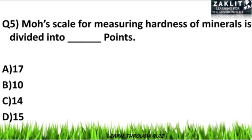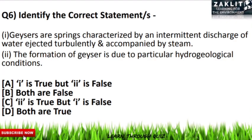Here is the sixth question, in which we have to identify the correct statements. Statement one: geysers are springs characterized by an intermittent discharge of water ejected turbulently and accompanied by steam. Statement two: the formation of a geyser is due to particular hydrogeological conditions.